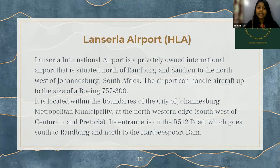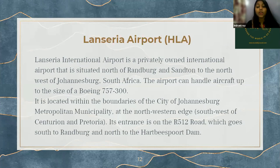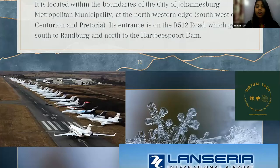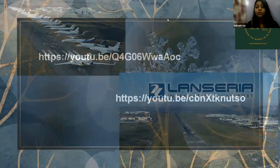Next one is Lanseria Airport, IATA code HLA. Lanseria International Airport is a privately owned international airport situated north of Randburg and Sandton, to the northwest of Johannesburg — the largest city of South Africa. The airport can handle aircraft up to the size of a Boeing 757-300. It is located within the boundaries of the Johannesburg Metropolitan Municipality. Its entrance is on the R512 road, which goes south to Randburg and north to Hartbeespoort Dam. Here you can see the picture of Lanseria International Airport and its logo.